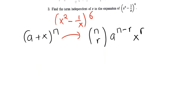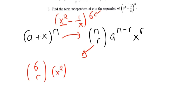In this case we don't know the term we're dealing with, so we'll just apply the same formula. Our n is the power 6. So we'll say 6 choose r. Our a is x squared, raised to the power 6 minus r. And then x in this case is negative 1 over x, raised to the power r, since we don't know what r is.